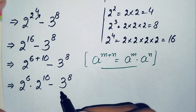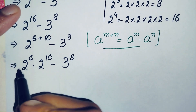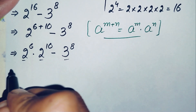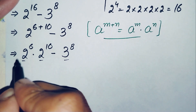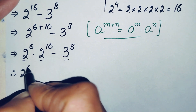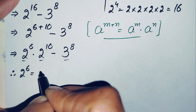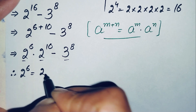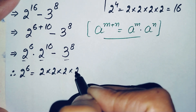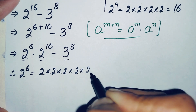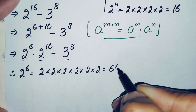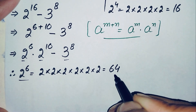Now we find the value of 2 raised to power 6, 2 raised to power 10, and 3 raised to power 8. For 2 raised to power 6, we multiply 2 six times: 2×2=4, 4×2=8, 8×2=16, 16×2=32, 32×2=64. So the value of 2 raised to power 6 is 64.